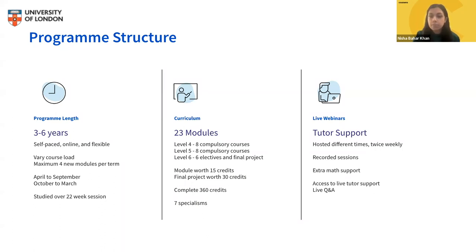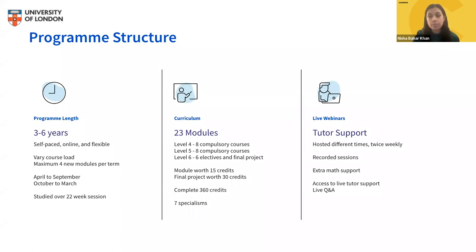Moving on to the curriculum, it's designed to give you a strong foundation in computer science and specialised knowledge in data science, AI, and web development. It covers industry and academic case studies and you'll build a portfolio of coursework and projects. The programme is structured into three levels — levels four, five, and six — following the UK higher education framework. Each module is worth 15 credits and the final project is worth 30, totalling 360 credits. You'll learn JavaScript, C++, Python, and C-sharp.